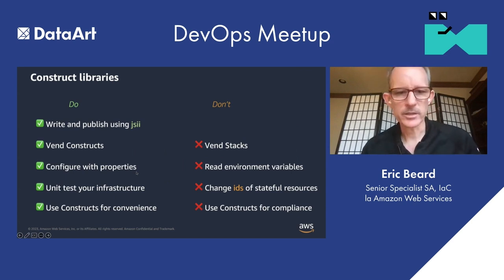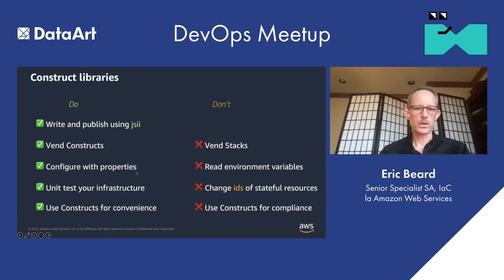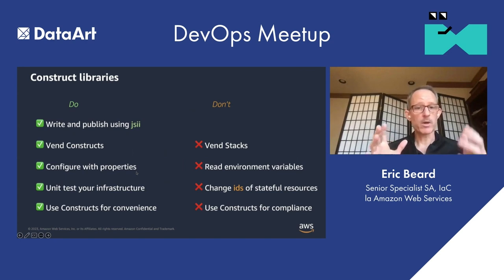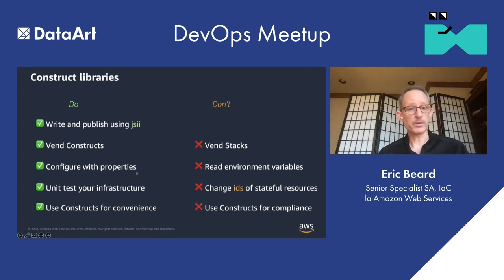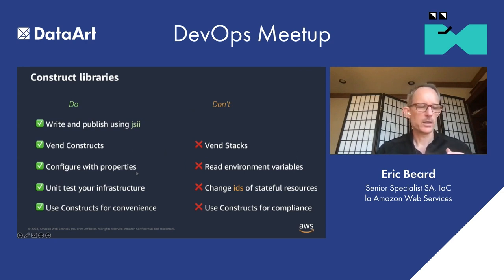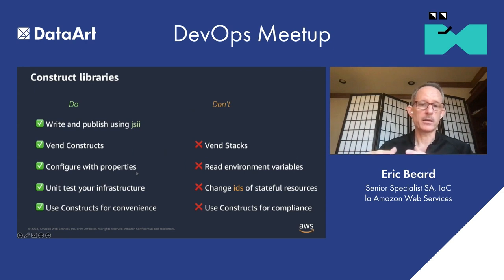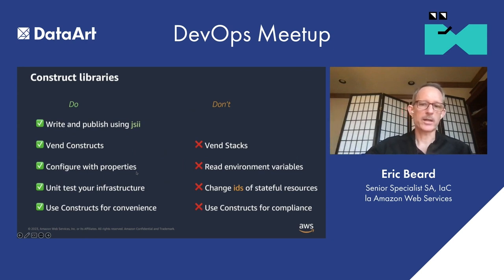The next best practice has to do with using constructs for convenience versus using constructs for compliance. You can write that L2.5 layer to encapsulate all of your company's best practices, which will help developers be compliant — but it's a convenience factor. Developers are in total control; they can override things and suppress things. If you have strict compliance concerns and auditors, I'd recommend using a separate feature like CloudFormation hooks to install checks outside of the developer's control — so that right before you actually deploy a CloudFormation stack, you make checks to ensure you're not breaking any of your company's rules. Then build that convenience into your construct library separately.